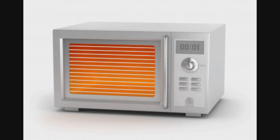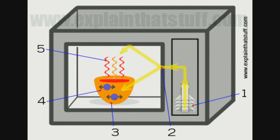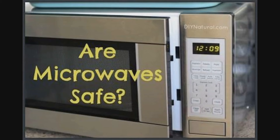Microwaves have wavelengths corresponding to frequencies of about 1 gigahertz to 300 gigahertz. Since microwaves have lower frequencies and longer wavelengths than light, some of their frequencies can be absorbed by water molecules, which helps with cooking and warming of food. Microwaves have approximately 5 milliwatts of microwave radiation per square centimeter.